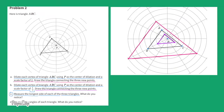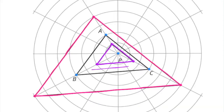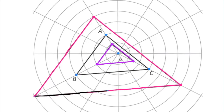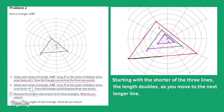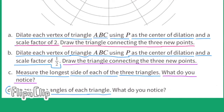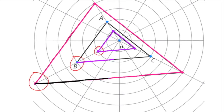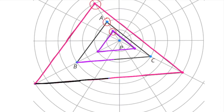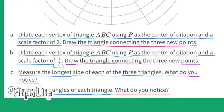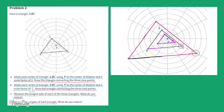Part C: Measure the longest side of each of the three triangles. You could do the comparison with a ruler. I'm going to drop the length down and compare — the length doubles as you move to the next longer line. Part D: Measure the angles of each triangle. I notice that the measure of each angle remains unchanged as the scale factor changes.